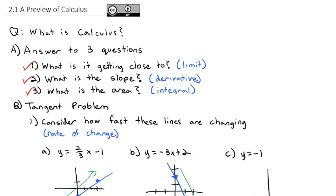What is it getting close to? We call that a limit — we'll focus on that in Chapter 2. What is the slope? We call that the derivative — we'll focus on that in Chapter 3. And what is the area? We call that the integral — we'll find that in Calc 2. I hope you enjoyed this preview of calculus. Take a look at the practice problems in the book, and I'll look forward to seeing you in class.